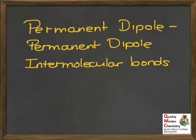This presentation introduces ideas about permanent dipole, permanent dipole intermolecular bonds. By the end of the presentation, you should be able to decide if and when permanent dipole, permanent dipole intermolecular bonds occur between a pair of molecules. You should be able to explain their presence, draw a diagram to represent the attraction involved, and compare the strength of permanent dipole, permanent dipole intermolecular bonds to other types of bonding.